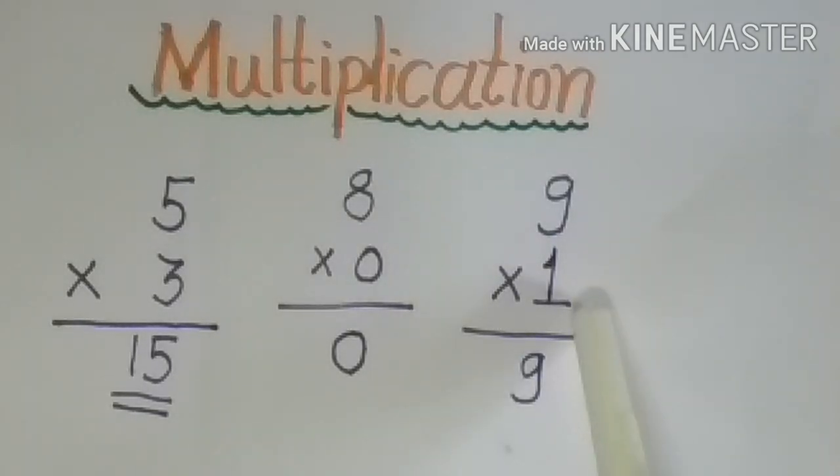9 multiply by 1. We can say 9 till 1, means 9 ones are 9. In this way we can find answer in two ways: 9 ones are also 9 and 1 nines are also 9.